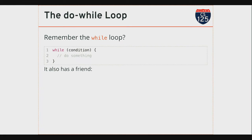So remember the while loop? That was the first loop that we looked at — the first way that we had the computer repeat a series of steps over and over again. The while loop had this form: a keyword while, followed by a conditional expression that's evaluated every time the loop starts. If that condition is true, I enter the body of the loop, delineated by those curly braces. I run whatever code is inside there, and then I return to the top and evaluate the condition again.